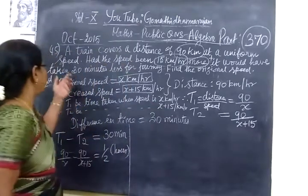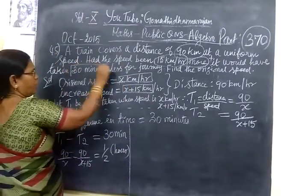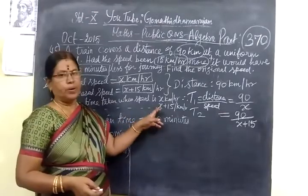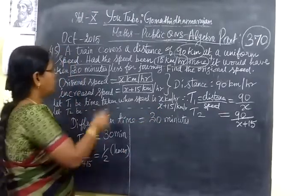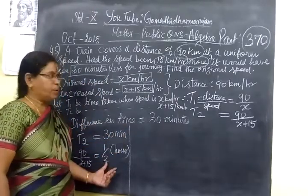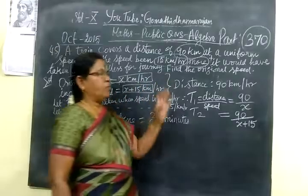Speed would have taken 30 minutes less, and the journey time would be 30 minutes, half hour less.